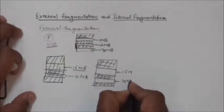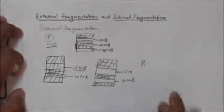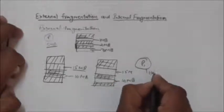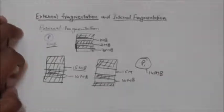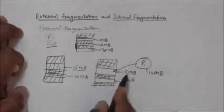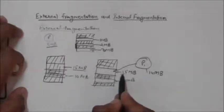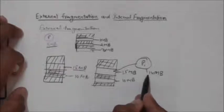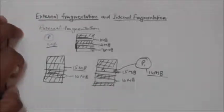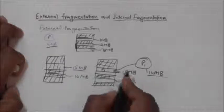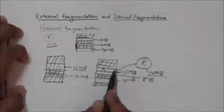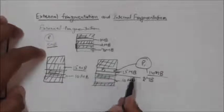Another process P1 arrives and for its execution it requires 14 MB of memory. Process P1 is allocated the 15 MB hole, which is broken into two parts: 14 MB used by process P1, and a remaining hole of 1 MB. So 14 MB is now occupied by process P1 and 1 MB of free memory is available as a hole.